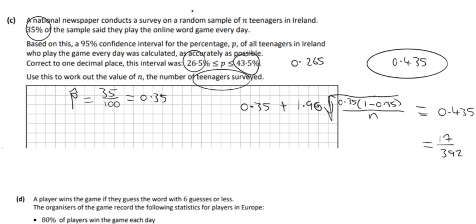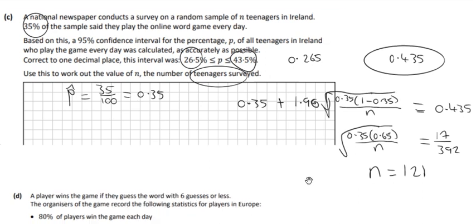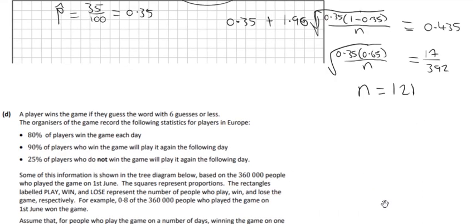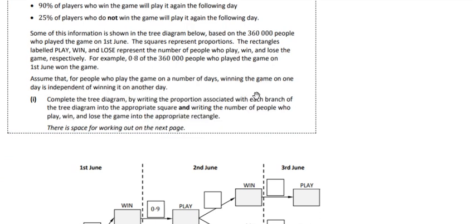Squaring both sides and solving gives n = 121 when rounded. So approximately 121 teenagers were surveyed. It's just a matter of moving things across the equal sign and solving — not actually that hard, just using the confidence interval formula.